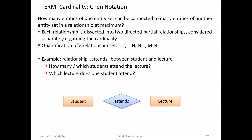Now let's see what is special about the Chen notation in our entity relationship model. We first have to consider one important question about cardinalities: how many entities of one entity set can be connected to how many other entities of another entity set in a relationship, at maximum. This means we have two directions in which the cardinality needs to be described — the first direction is from one entity set to the other, and the other direction is from that entity set back to the first.